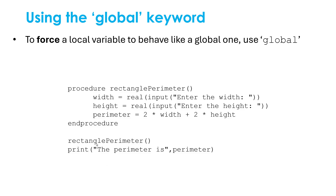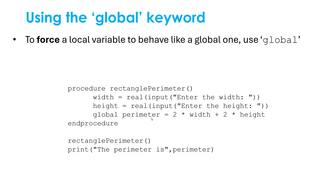We're getting user input for the values, and the parameters — width, height, and perimeter — are all currently local variables. In my main program I've called the procedure and tried to include the perimeter variable in a print line. The issue is this would cause an error because perimeter is local and I'm trying to access it outside of the procedure. However, I can force it to become a global variable by sticking the word 'global' before the identifier. So perimeter is now a global variable — width and height are still local — and this code would now work, printing out the perimeter based on this procedure.